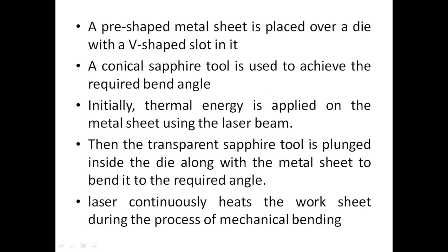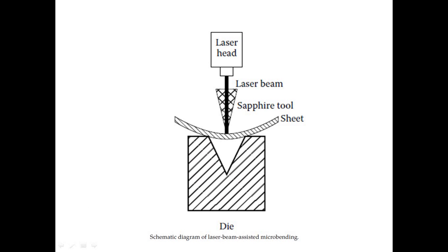A pre-shaped metal sheet is placed over a die with a V-shaped slot. A conical sapphire tool is used to achieve the required bend angle. Initially, thermal energy is applied on the metal sheet using the laser beam. Then the transparent sapphire tool is plunged inside the die along with the metal sheet to bend it to the required angle. Laser continuously heats the workpiece during mechanical bending. The figure shows a schematic diagram of the laser-assisted micro-bending method.